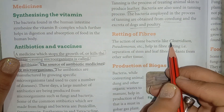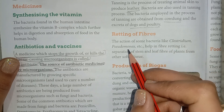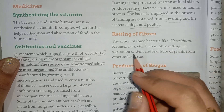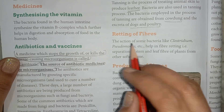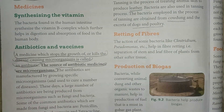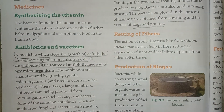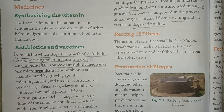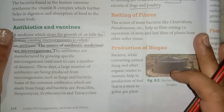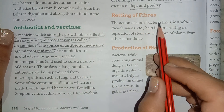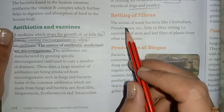Next is retting of fibers. The action of some bacteria like Clostridium and Pseudomonas helps in fiber retting. Fiber retting means the separation of stem and leaf fiber of plants from other softer tissue. So bacteria like Clostridium and Pseudomonas are used in this process.